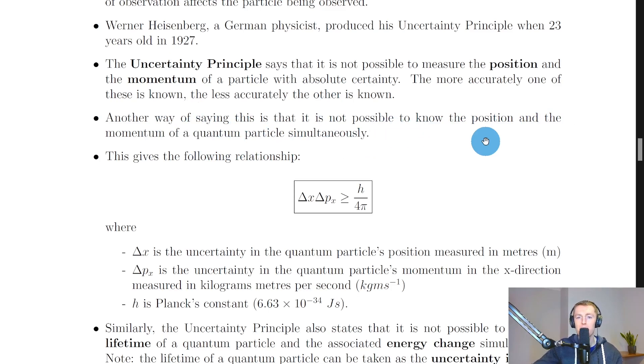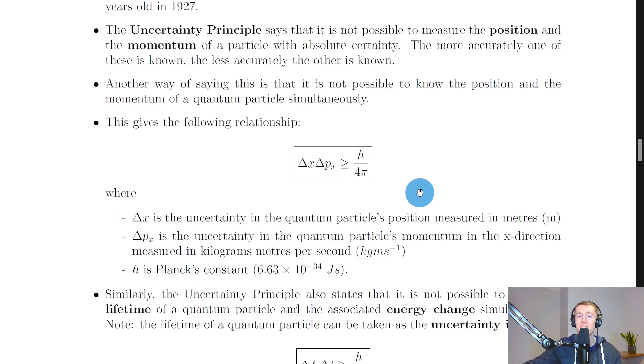Now this is the uncertainty principle in terms of position and momentum, but we will soon see another definition of the uncertainty principle in terms of the energy and lifetime of a quantum particle. So the relationship between momentum and position is given by this thing here. So it's delta x delta px is greater than or equal to h over 4 pi.